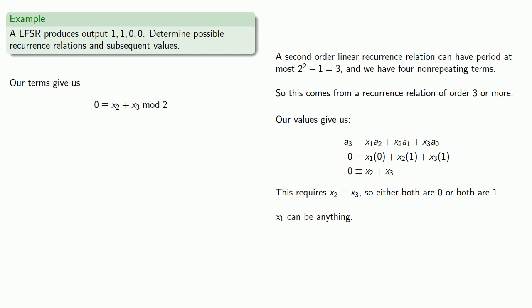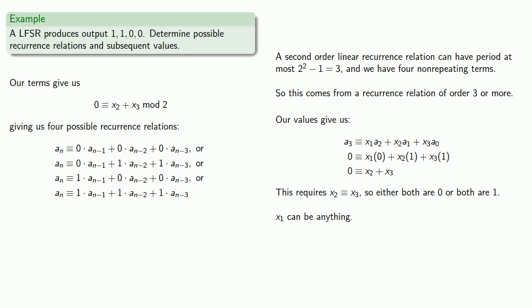And so that gives us four possible recurrence relations. x2 and x3 could both be 0, and x1 could also be 0. x2 and x3 could both be 1, and x1 could be 0. x2 and x3 could both be 0, but x1 could be 1. And x2 and x3 could both be 1, and x1 could also be 1.